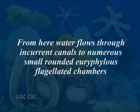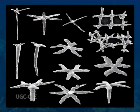From here, water flows through incurrent canals to numerous small rounded flagellated chambers, then through excurrent canals to the spongocoel, and finally through a large osculum to the outside. The skeleton of Spongilla consists of siliceous spicules in the form of a network of smooth or spiny large and small oxeas (curved monaxons) embedded in spongin fibres. Reproduction is both sexual and asexual — asexual by gemmules and sexual through an unusual free-swimming larva characteristic of Spongilla.